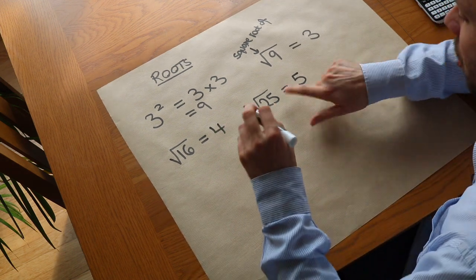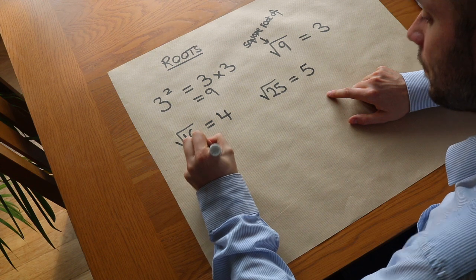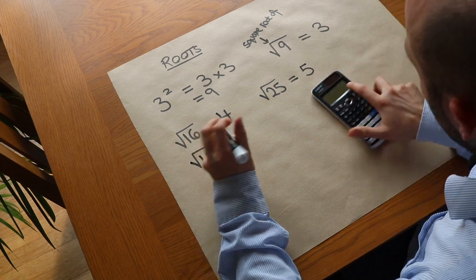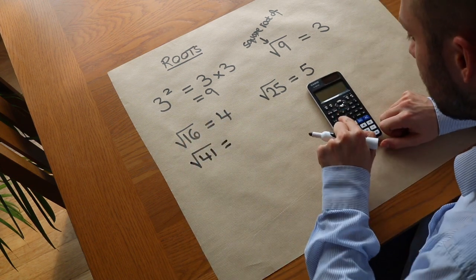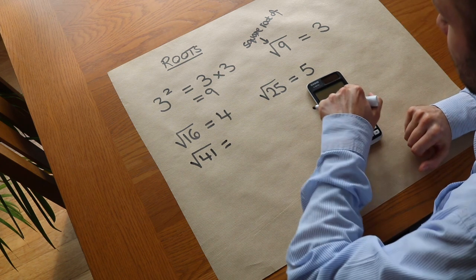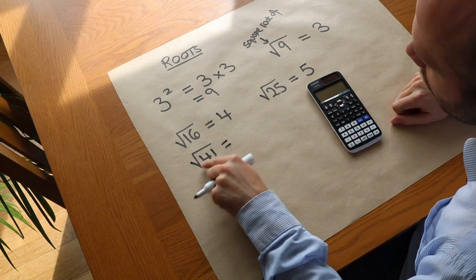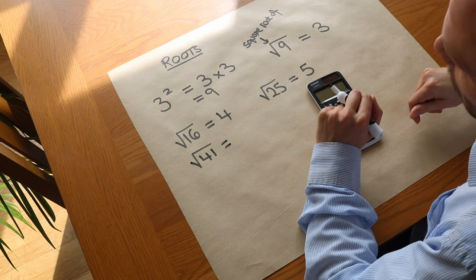Sometimes we don't get a nice whole number. If I had to find the square root of 41, you could do that on your calculator. If you press the square root button and then type in 41 and press equals, it will actually say the square root of 41 because it's trying to give you an exact answer.